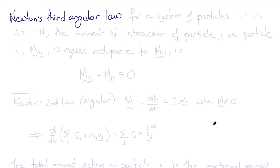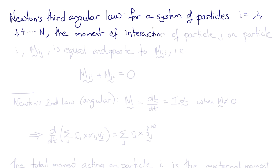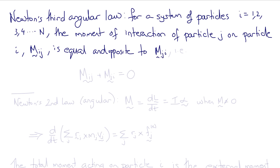Newton's third angular law for a system of particles i equals one through N states that for every moment interaction there is a moment reaction: the moment of interaction of particle j on particle i, Mᵢⱼ, is equal and opposite to the moment of interaction of particle i on particle j, Mⱼᵢ. Therefore, Mᵢⱼ plus Mⱼᵢ must equal zero.